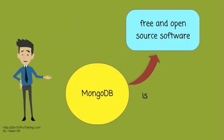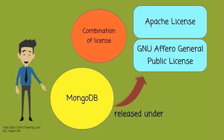MongoDB is free and open source software. It is released under a combination of the GNU Affero General Public License and the Apache License.